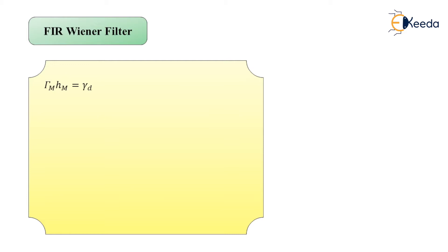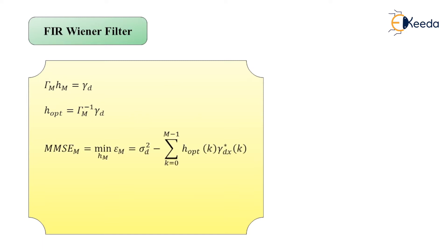The solution for the optimum filter coefficients is expressed as: h_opt = Γ_M⁻¹ · γ_d. The resulting minimum mean square error (MMSE_M) obtained by using Wiener filtering is: MMSE_M = σ_d² − summation over k from 0 to M−1 of h_opt(k) · γ*_dx(k).